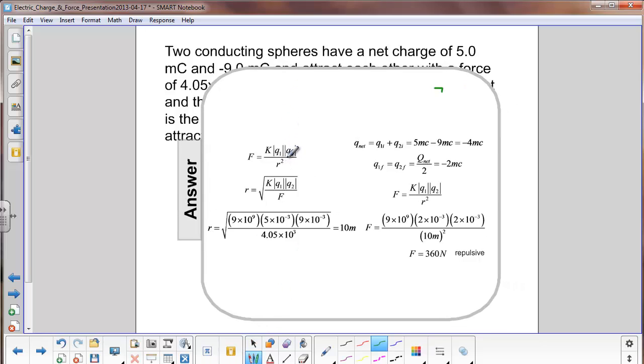Here's the first part of the problem where we wanted to find out the initial separation distance. We use Coulomb's law. We solve for r. Basically, you just multiply r squared over here, divide it through by f, and then take the square root of both sides. And we find that these spheres were initially 10 meters apart.